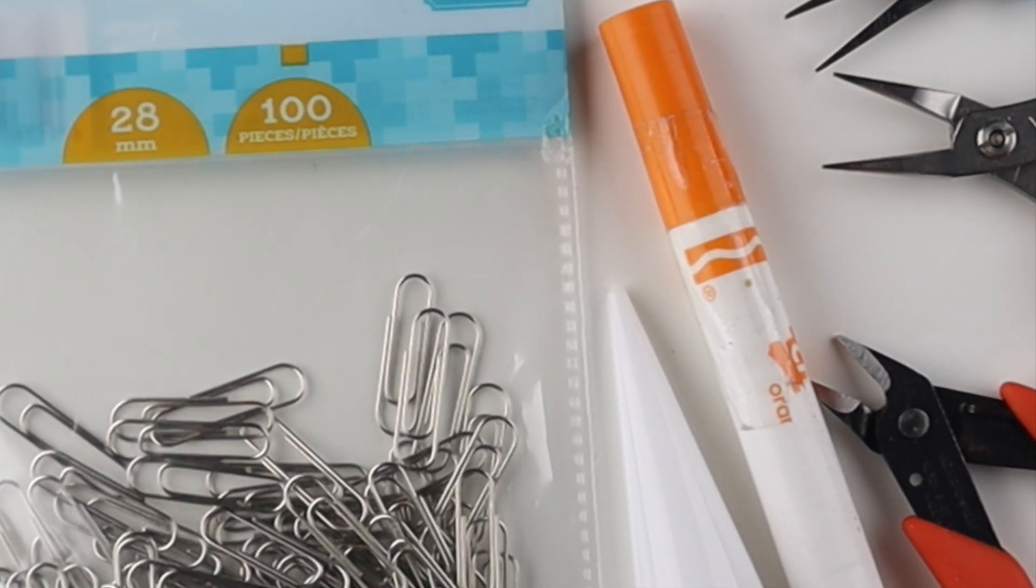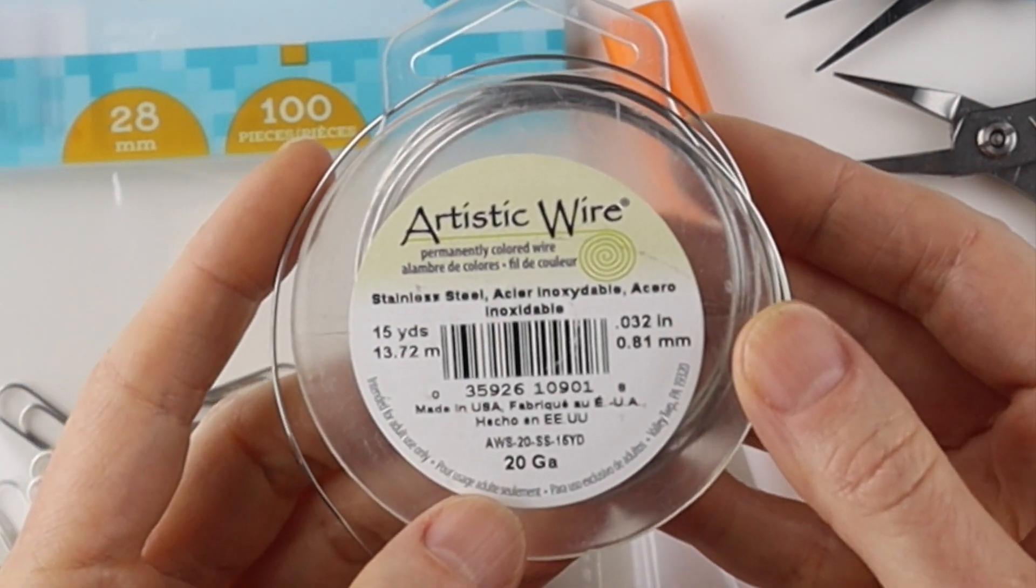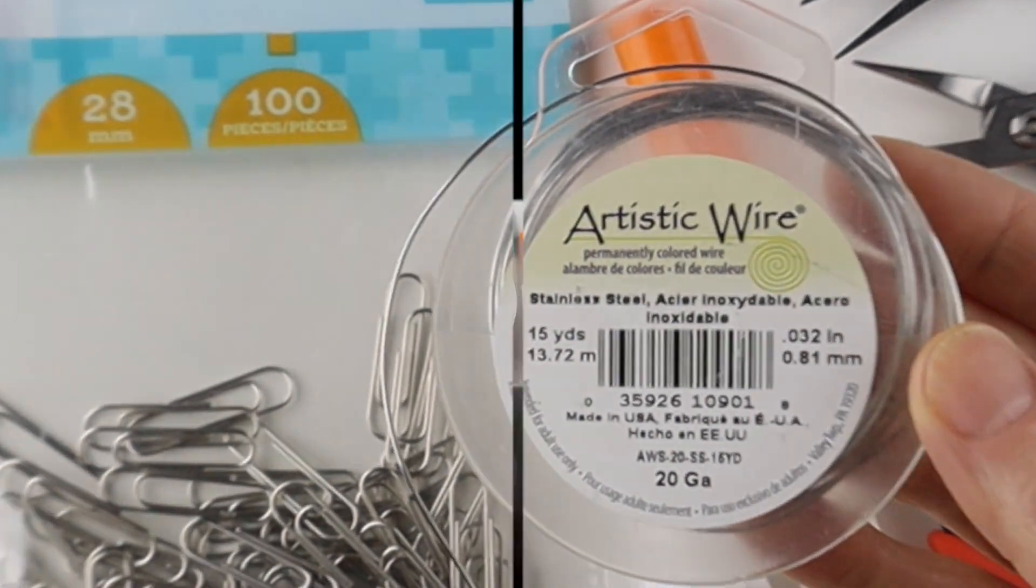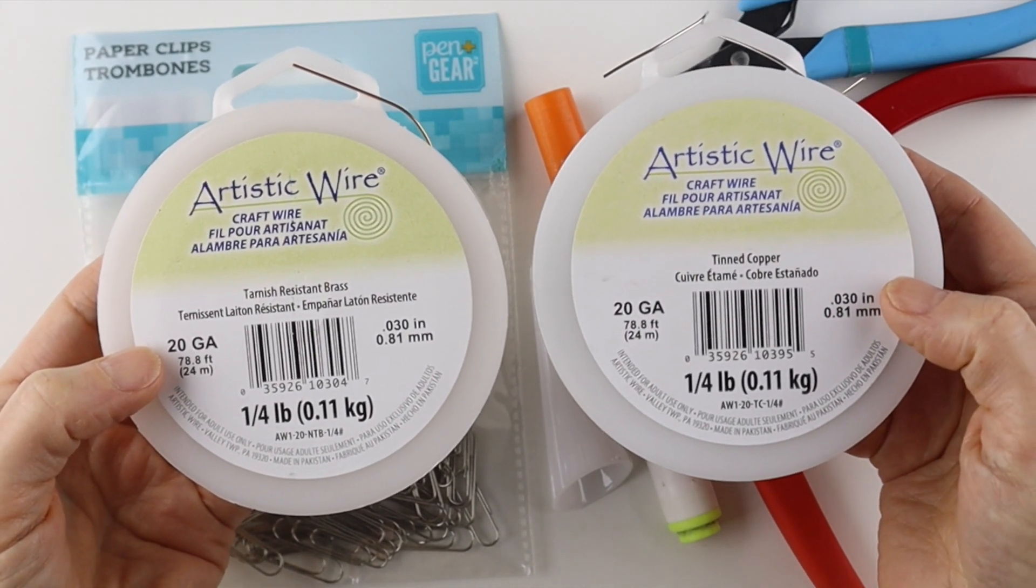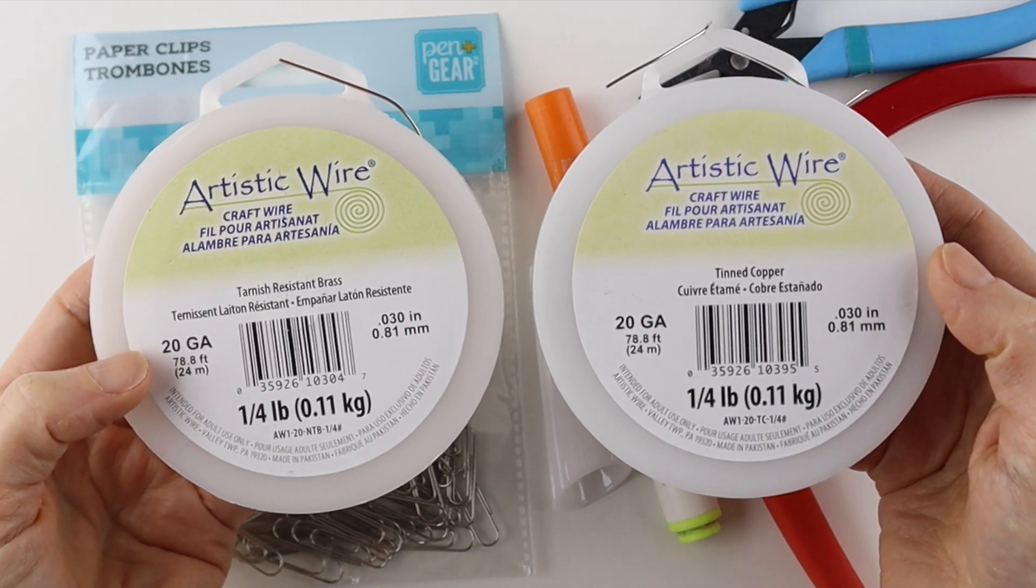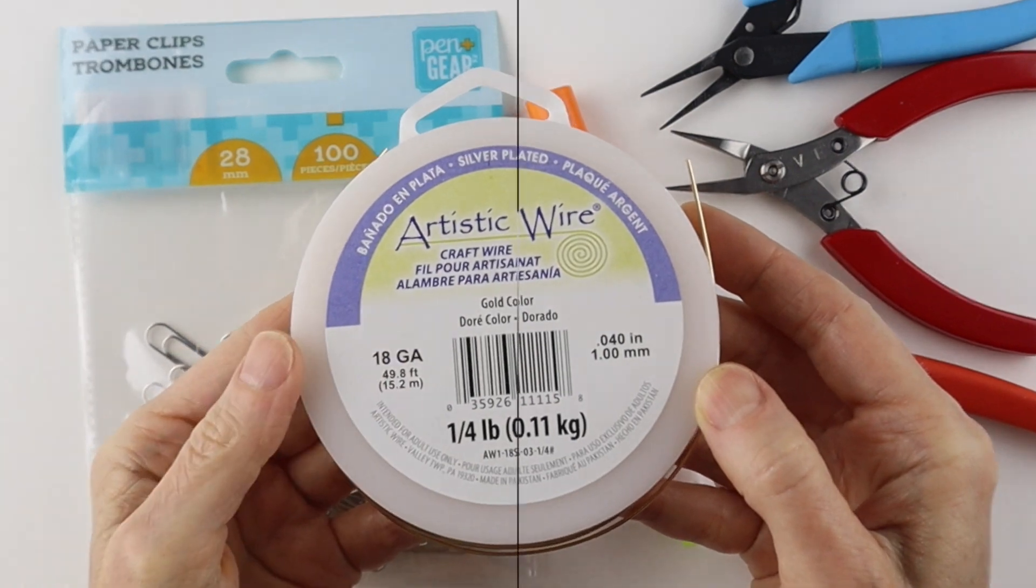If you don't have paperclips, the best thing to use is stainless steel wire. This is 20 gauge. It's quite stiff, just like the paperclips. You can use 20 gauge tarnish resistant brass, tinned copper, or any half hard wire. And if you only have a softer wire, use a little thicker, like 18 gauge.